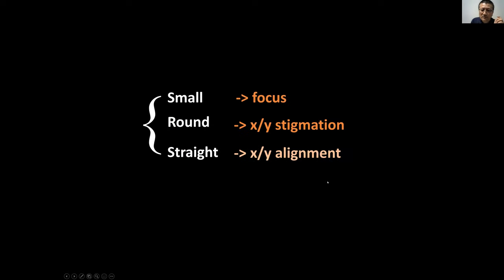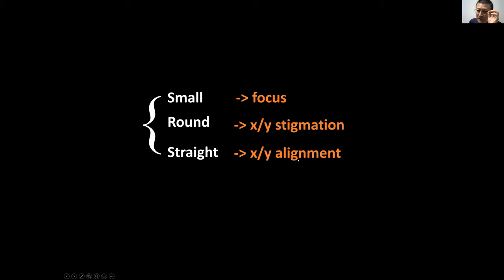When the image shifts as you change focus, you use the X-Y alignment knobs to shift the aperture back to the correct location. Then change focus again — if the image no longer moves, your aperture is aligned. So in summary: we want a small beam, a round beam, and a straight beam. When you change focus, if the image changes shape, you have an astigmatism problem. If the image position changes, you have an alignment problem. Correct stigmation using X-Y stigmation knobs, correct alignment using X-Y alignment knobs, then focus again.